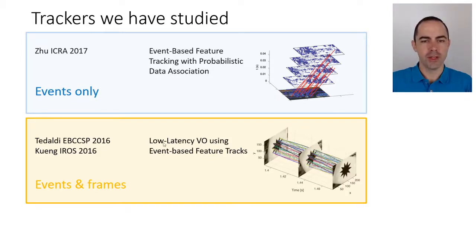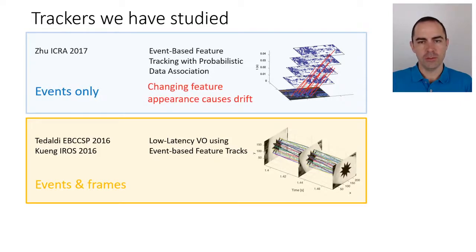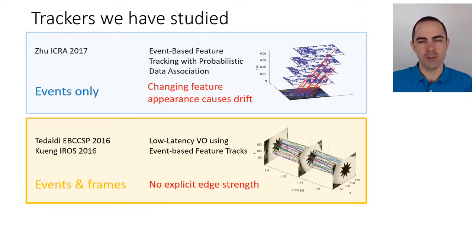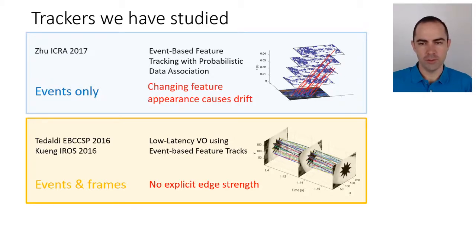Two earlier papers detect natural features on the frame and then track them using events only. The problem, as we've seen, is a change in appearance causing drift in data association. If features are built from frames they may not drift, but using point sets may not explicitly account for edge strength, which is an important property of edges and events.